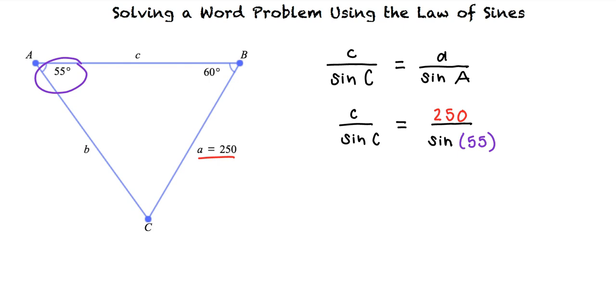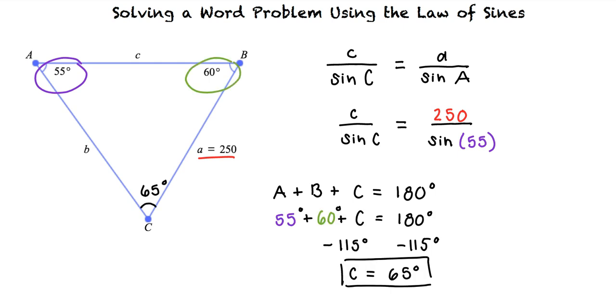The sum of all angles in a triangle is 180 degrees. Therefore, angle A plus angle B plus angle C equals 180 degrees. Substituting in the known angle measures of 60 and 55 degrees, we can see that angle C equals 65 degrees. We can substitute this value into our equation and then solve for side C.